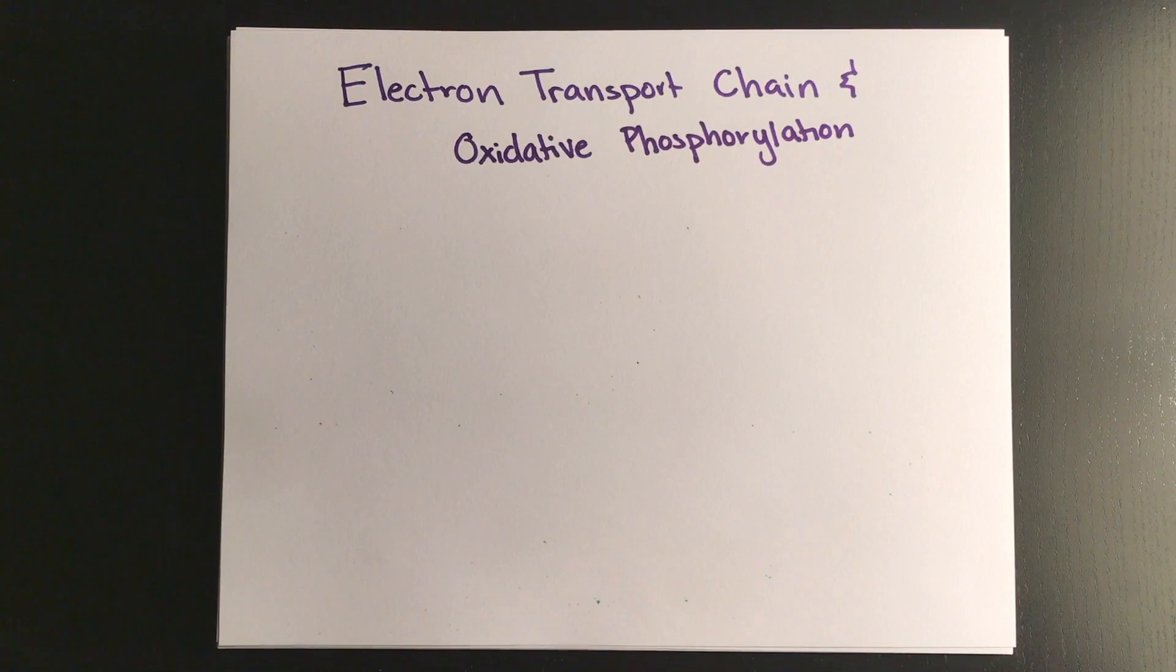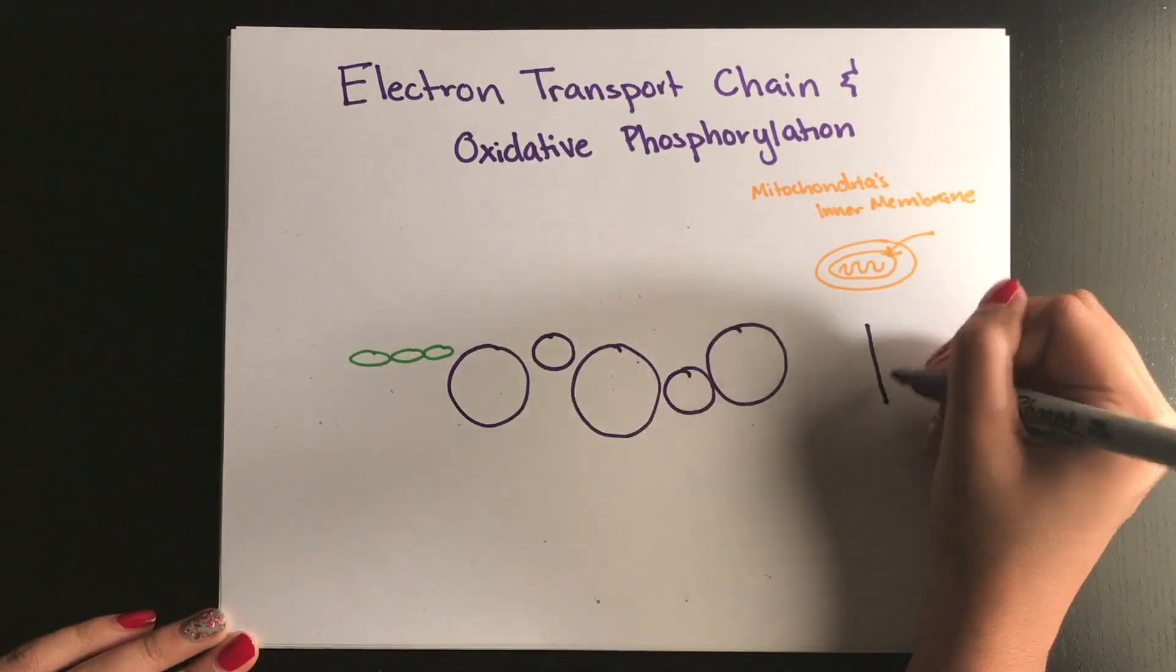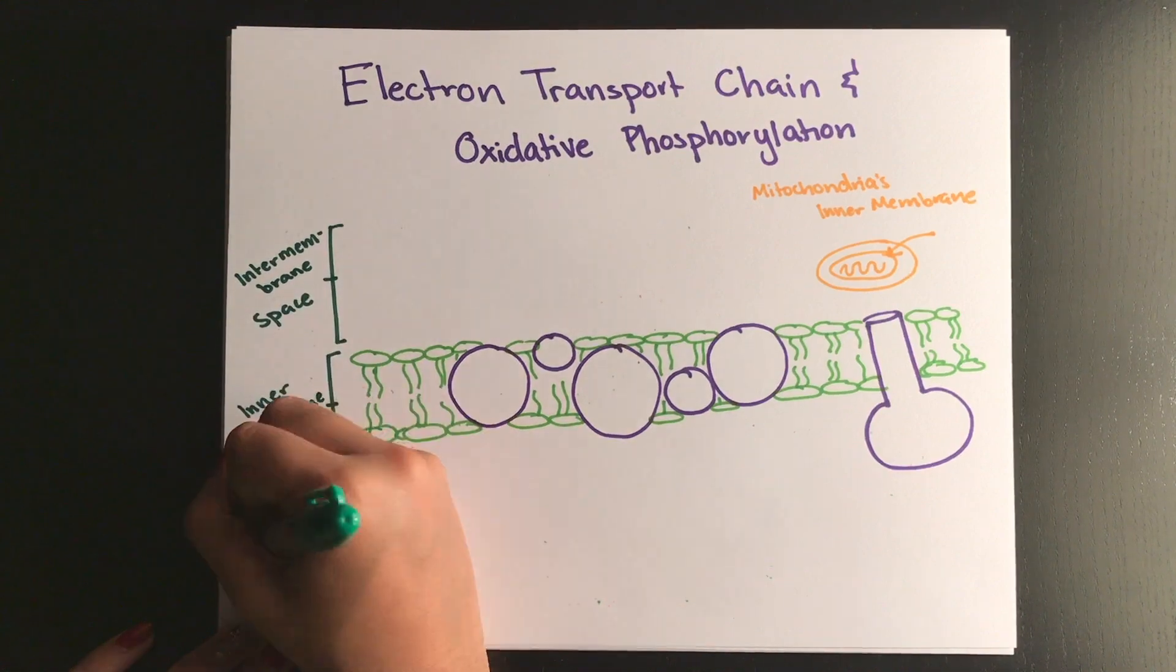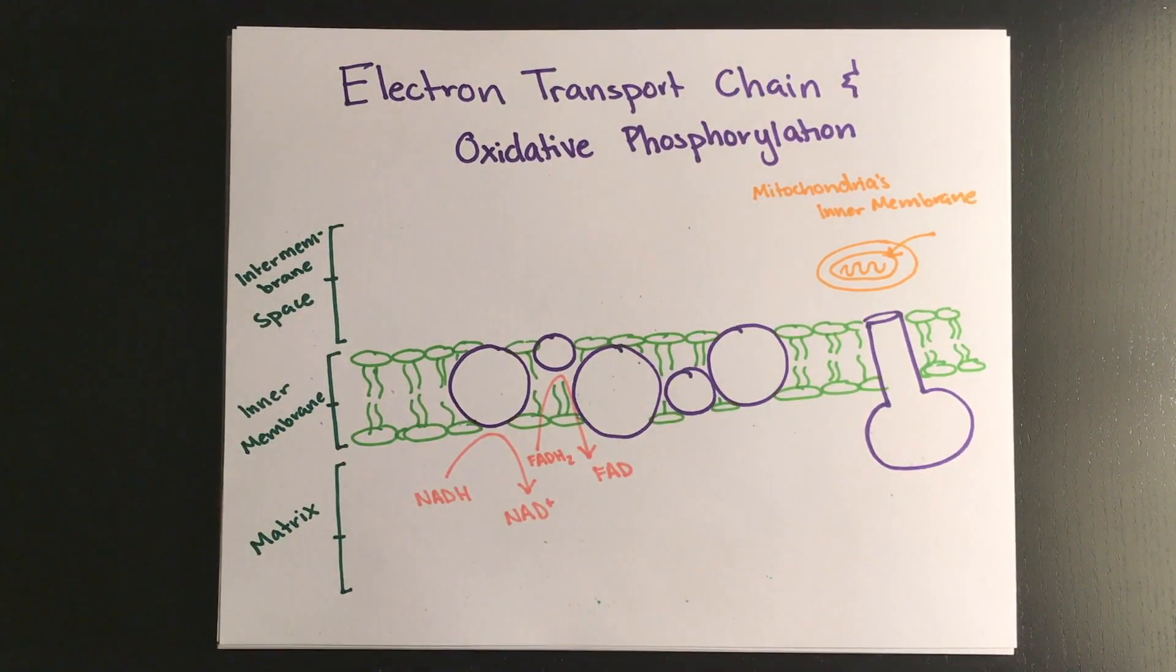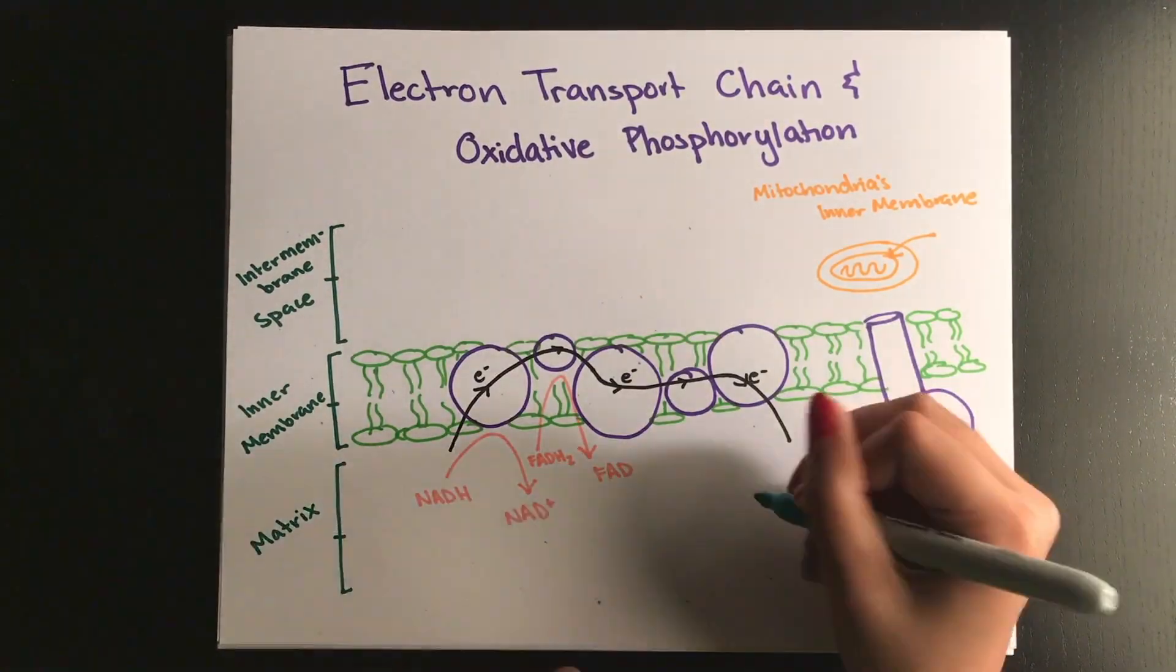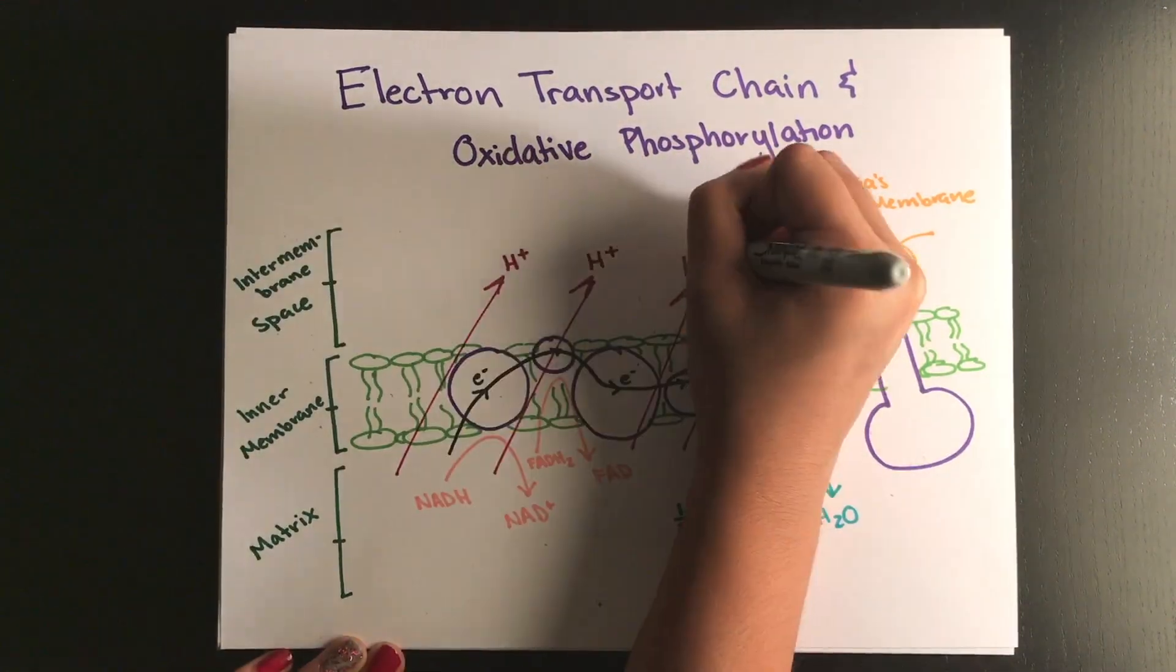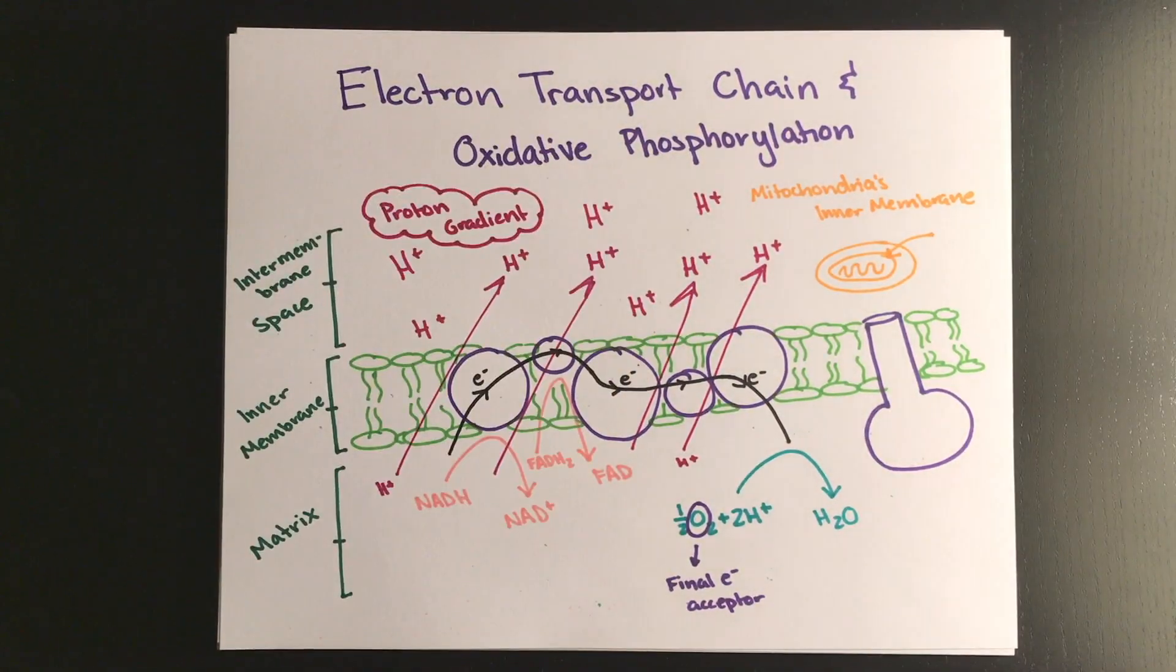Lastly is the electron transport chain and oxidative phosphorylation. These two steps occur in the inner membrane of the mitochondria. Because most of that energy is stored in the form of reduced electron carriers, here is where we use them to make more ATP. During the ETC, electrons travel from one carrier to the next in the chain until they reach oxygen and form water. This is why oxygen is called the final electron acceptor. Energy is used from the electrons to actively transport hydrogen ions out of the mitochondrial matrix and this creates a proton gradient.